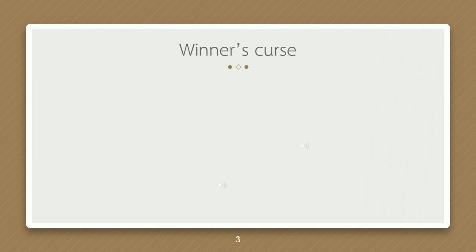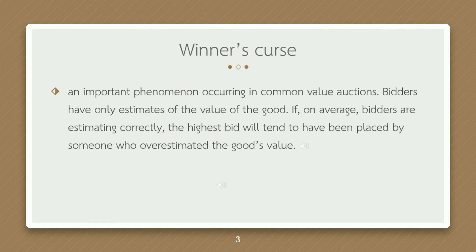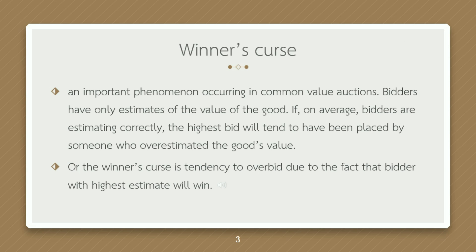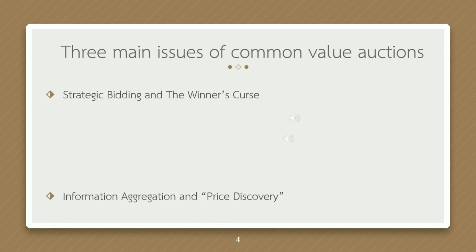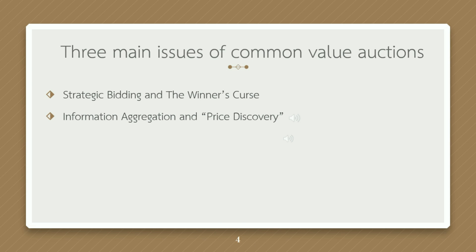An important phenomenon occurring in common value auctions is the winner's curse. Bidders have only estimates of the value of the good. If on average bidders are estimating correctly, the highest bid will tend to have been placed by someone who overestimated. The winner's curse is the tendency to overbid due to the fact that the bidder with the highest estimate will win.